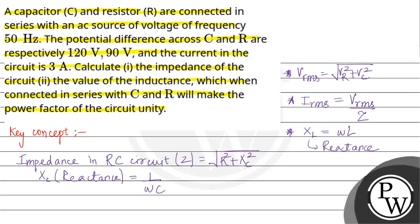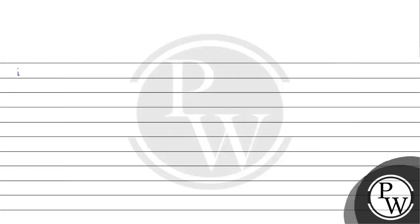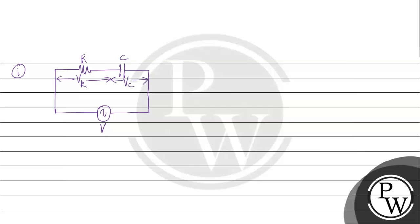For the first part, we have an RC circuit. The voltage across the capacitor VC is 120 volt and the voltage across the resistor VR is 90 volt. So the supply voltage V_RMS equals square root of VR squared plus VC squared, which gives square root of 90 squared plus 120 squared.